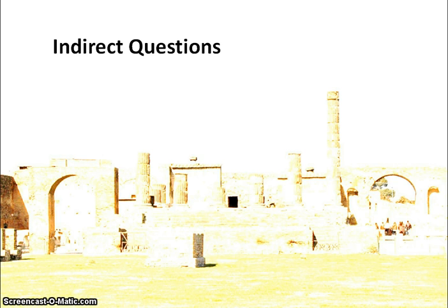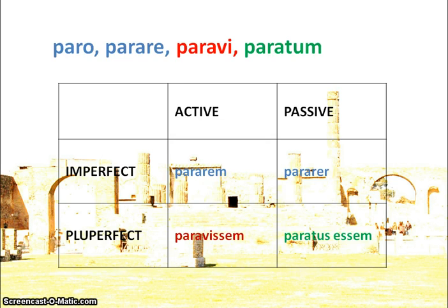They're going to use the subjunctive, so let's have a quick recap of how the subjunctive is formed for GCSE. We have our principal parts at the top: paro, parare, parawi, paratum — from paro meaning 'I prepare'.